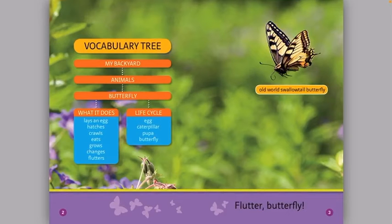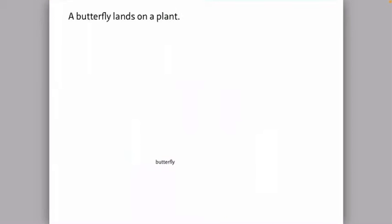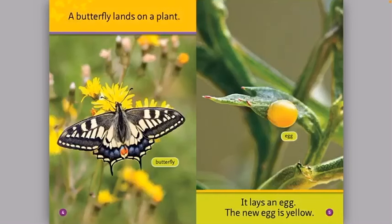This is a picture of an old world swallowtail butterfly. Flutter Butterfly. A butterfly lands on a plant. It lays an egg. The new egg is yellow.